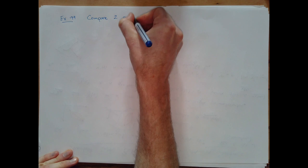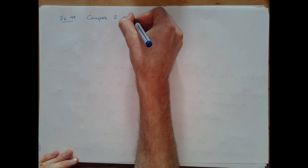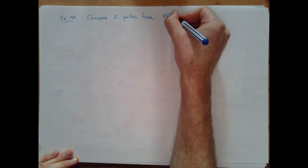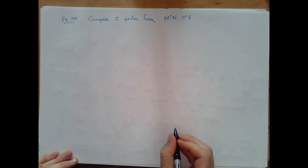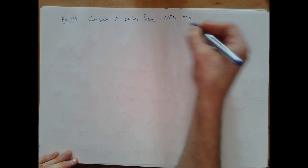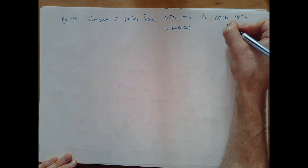Now let's think about a sphere — this is Example 99 in the typed notes. We want to compare two paths. I'll give two points on Earth in terms of latitude and longitude. Suppose I start at 60 degrees north, 0 degrees east, which is somewhere in the North Sea — a convenient choice of latitude and longitude. I want to travel from there to 60 degrees north, 90 degrees east, which is somewhere in Russia.